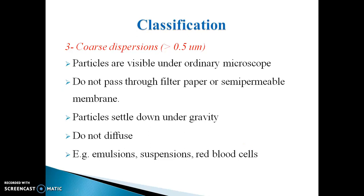The last type of dispersion based on particle size is coarse dispersion, in which the particle size is more than 0.5 micrometer. Properties of coarse dispersion include: particles are visible under an ordinary microscope; particles do not pass through filter paper or a semipermeable membrane; and particles settle down due to the influence of gravitational force, as there is no Brownian motion due to the larger particle size.